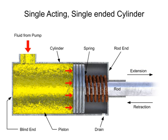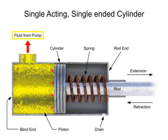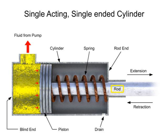When a control valve directs fluid out of the port, the fluid pressure is removed. The force of the spring pushes against the piston in the other direction, and the rod returns to the cylinder. This is called the retraction stroke.